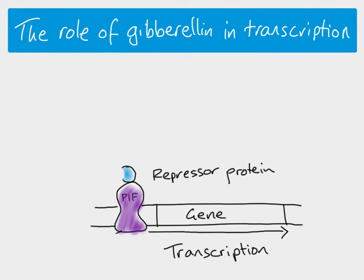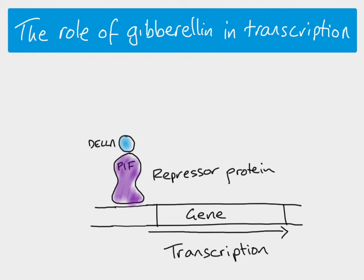When the DELLA repressor protein is bound to PIF, PIF is no longer able to bind to the gene, which means transcription cannot take place. You need the transcription factor bound to the DNA so that RNA polymerase is able to bind and transcribe it. So with PIF not bound, the amylase gene is not transcribed.